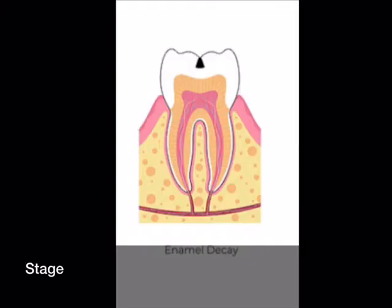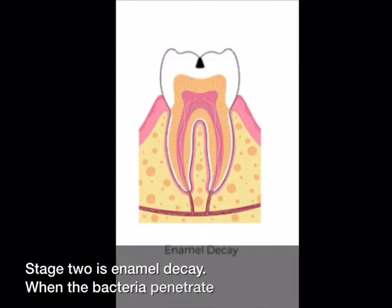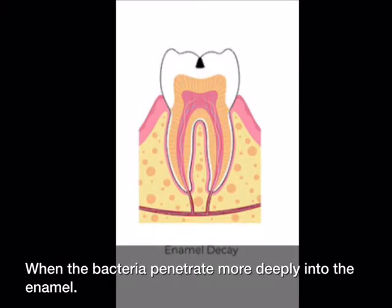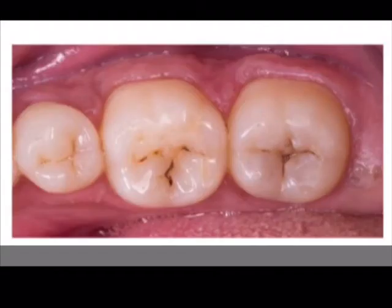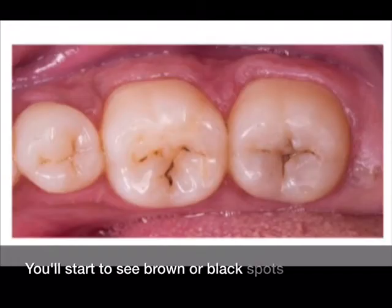Stage two is enamel decay. When the bacteria penetrate more deeply into the enamel, you'll start to see brown or black spots appear on your teeth.